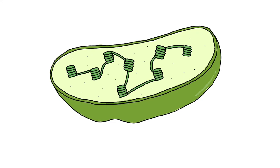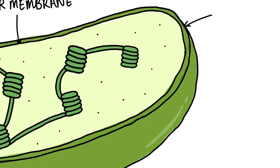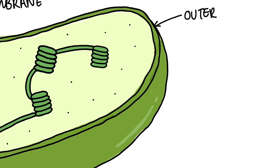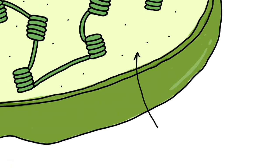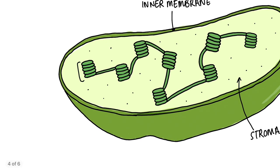So where does all of this take place? Well, it's in these organelles called chloroplasts that you find in plant cells. And you need to know the structure of a chloroplast. You can probably see from the diagram we've got a double membrane — so we've got an outer membrane and an inner membrane. We've got some goopy stuff in the middle called the stroma. And you can see these little pancake structures. Each stack of pancakes we call a granum for singular, grana for plural.